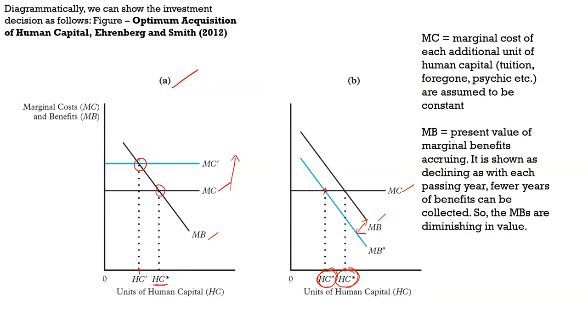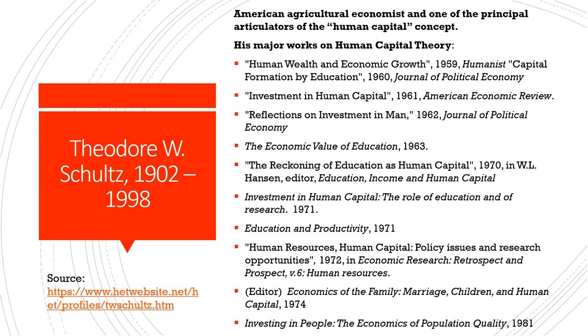Let us now move to the second part of this lesson, where we introduce some of the influential thinkers in the field of human capital theory. Much of the theorization we have discussed—regarding time delay, education as durable productive capital, foregone costs, opportunity costs, and psychic losses—draws from extensive studies carried out by many influential thinkers over the last 70 to 80 years. It is important for learners to know a few economists who have made substantial contributions in this field.